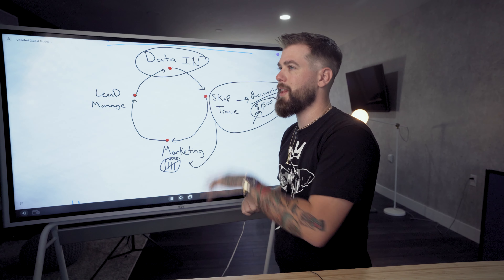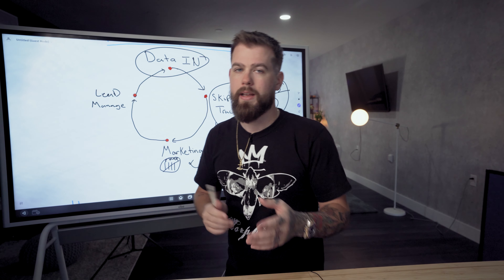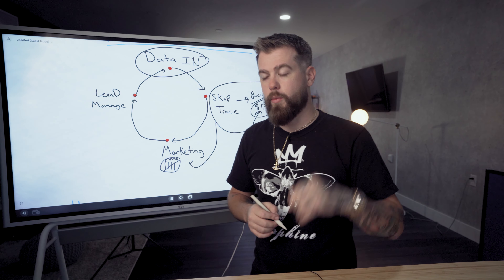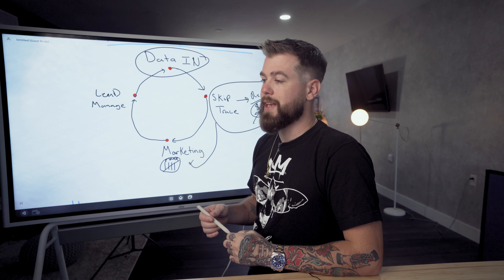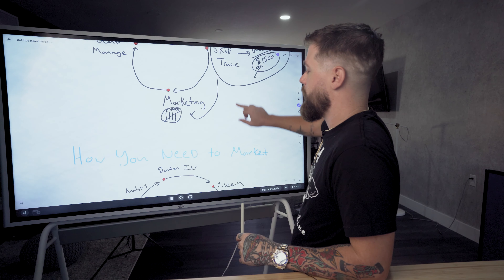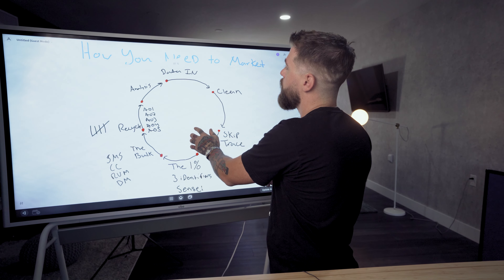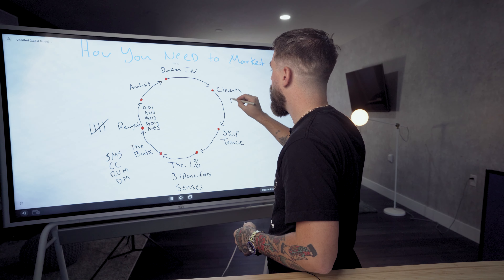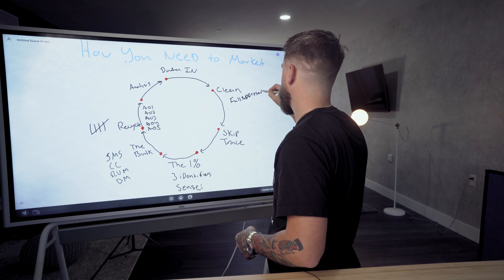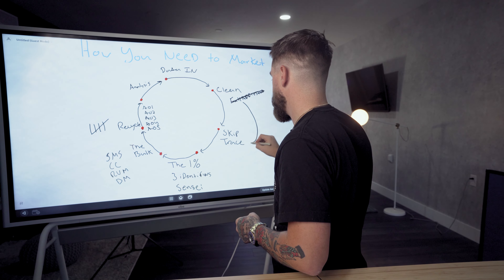There are lots of variables that constitute incomplete data. Check out the REIsift YouTube channel — there's a playlist for the Ninja Level One Cert that explains what incomplete data is. Essentially, all you want is clean data with full addresses so you get the results you want. Take those full addresses and skip trace them.